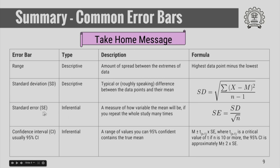The standard error is an inferential error bar and is a measure of how variable the mean will be if you repeat the whole study many times. It is calculated by dividing the standard deviation by the square root of the sample size n. The 95 percent confidence interval is an inferential error bar giving a range of values that you can be 95 percent confident contains the true mean. Its formula is mean plus or minus t(n-1) multiplied by the standard error, where t(n-1) is the critical value of t. If your sample size n is 10 or more, the 95 percent confidence interval is approximately mean plus or minus 2 standard errors.